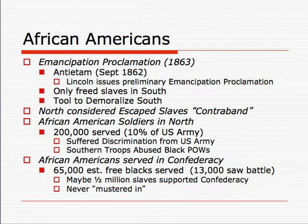The Emancipation Proclamation of 1863 was issued after the Battle of Antietam, one of the bloodiest battles of the Civil War. Lincoln saw this as the best time to issue the Emancipation Proclamation because it was also the first time the United States troops had scored a massive defeat over the Confederacy, or at least a defeat over the Confederacy.